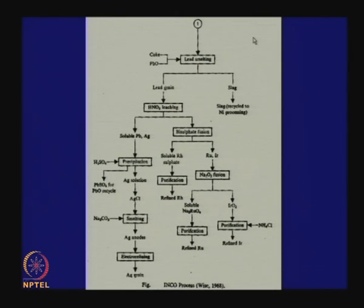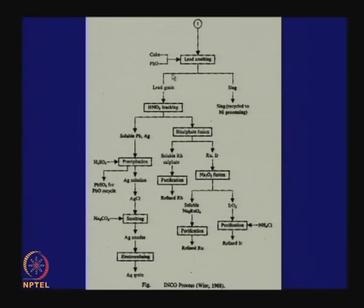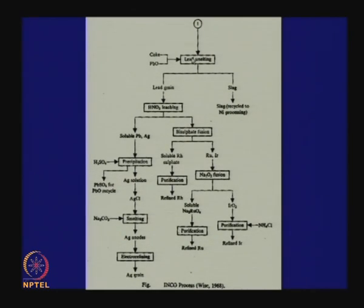Silver always dissolves in lead, so the first thing will be to take out the silver by dissolving in lead, which will be produced by a pyrometallurgical process. We go for a lead smelting with the residue, adding PbO and coke, so that lead is produced which will dissolve the silver present in the residue.